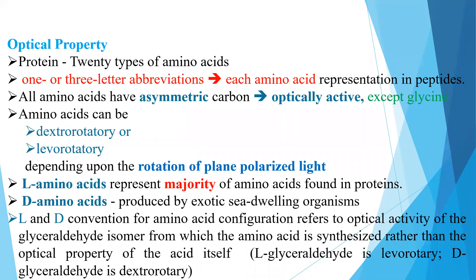There are 20 types of amino acids, and one- or three-letter abbreviations are used to represent amino acids in peptide linkages. All amino acids have asymmetric carbon atoms, and because of the presence of asymmetric carbon atoms, amino acids are optically active. The exception is glycine, because it does not contain an asymmetric carbon.